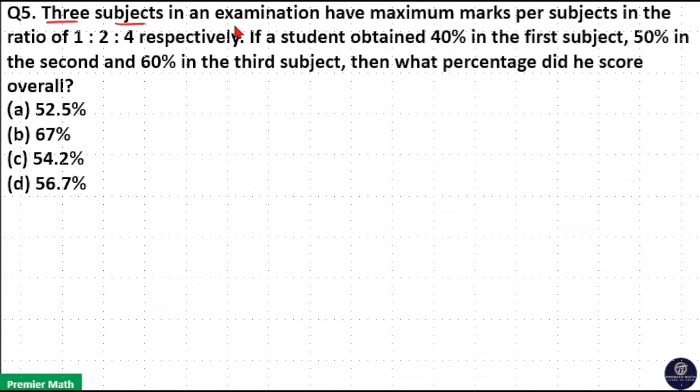Three subjects in an examination have maximum marks per subject in the ratio 1:2:4 respectively. If a student obtained 40% in the first subject, 50% in the second, and 60% in the third subject, then what percentage did he score overall?